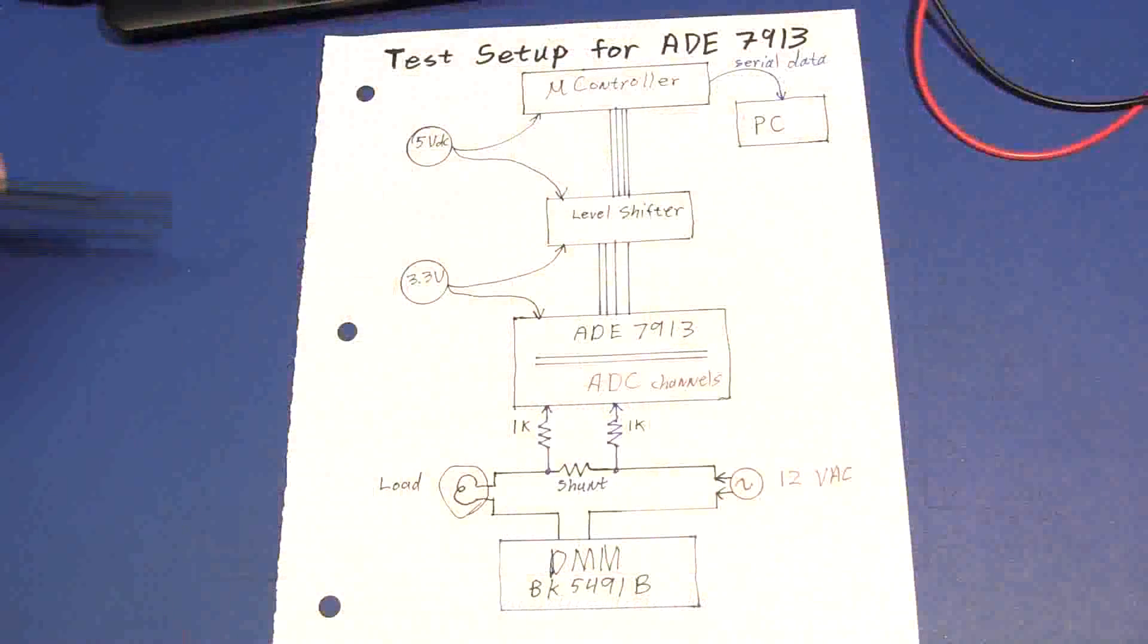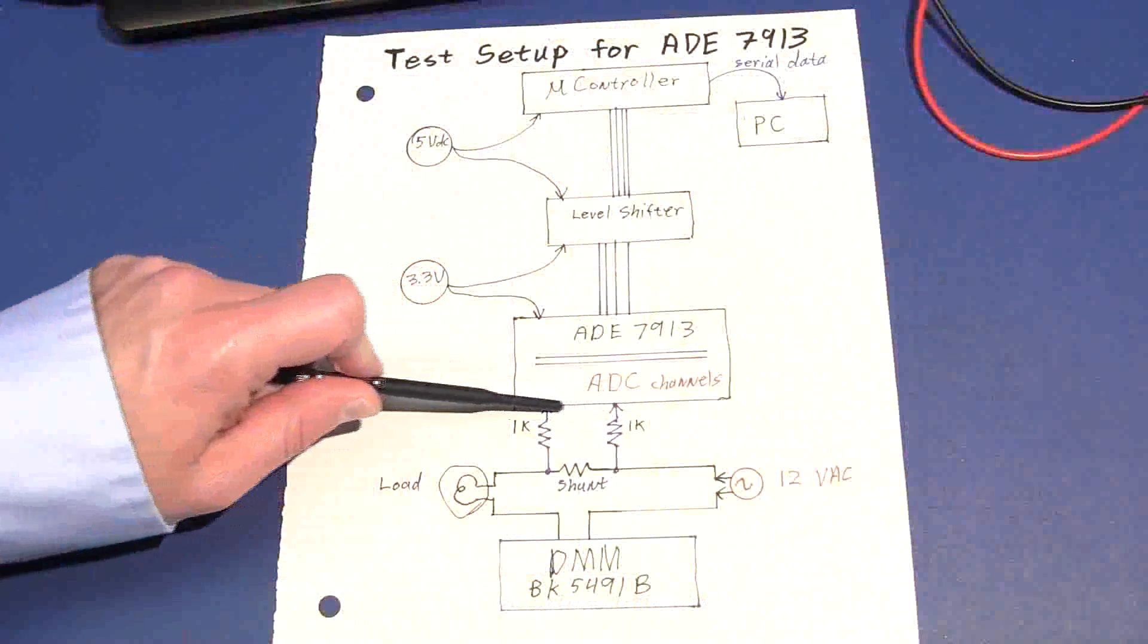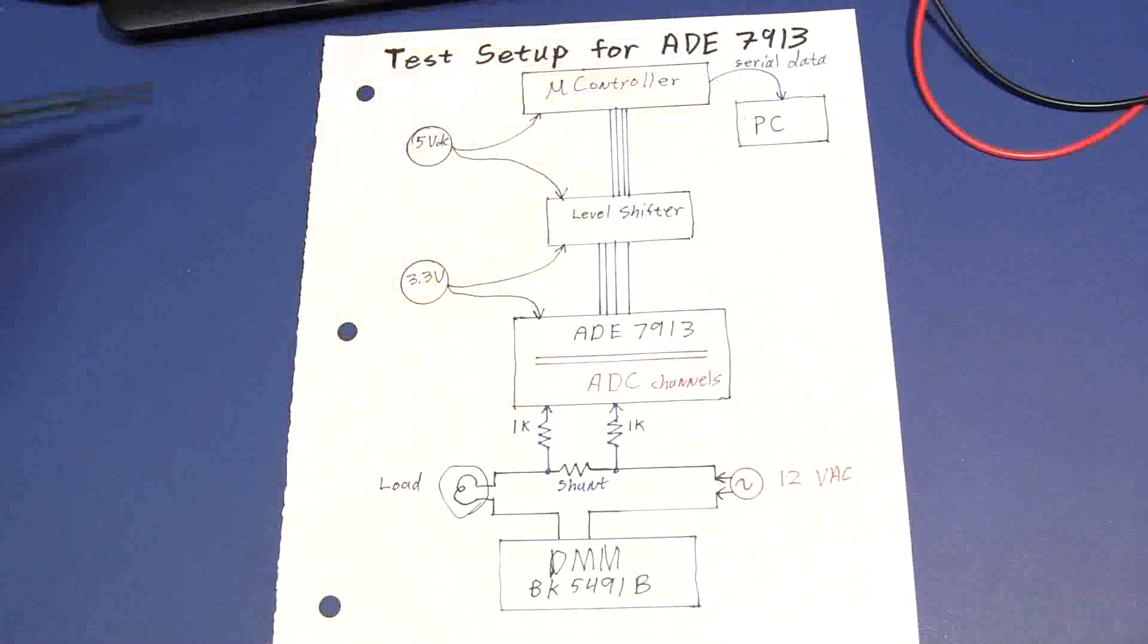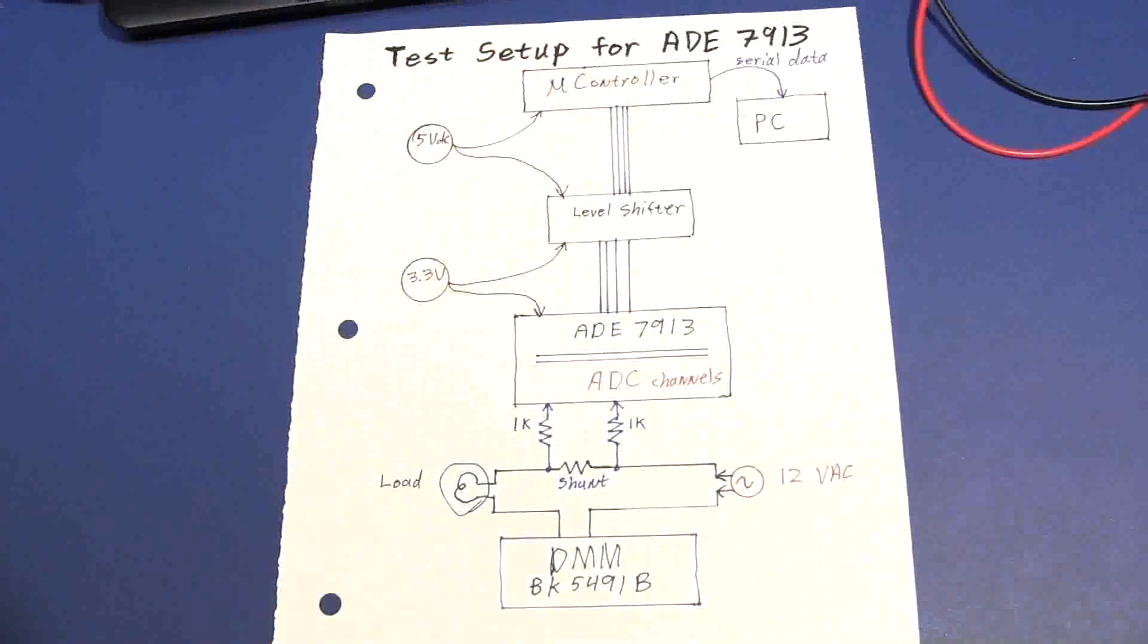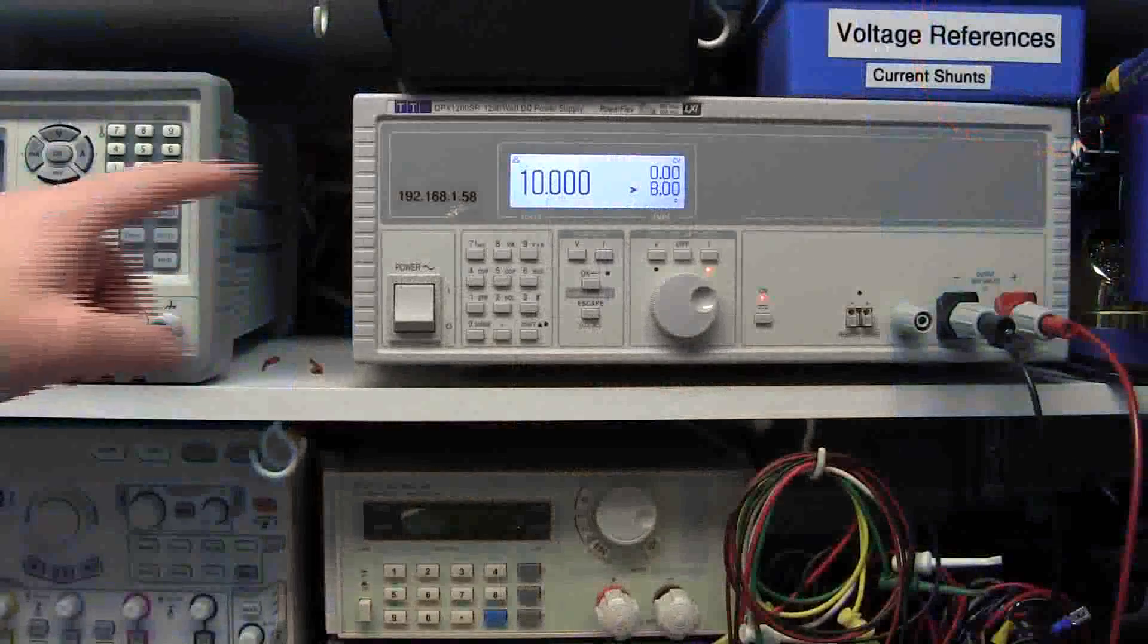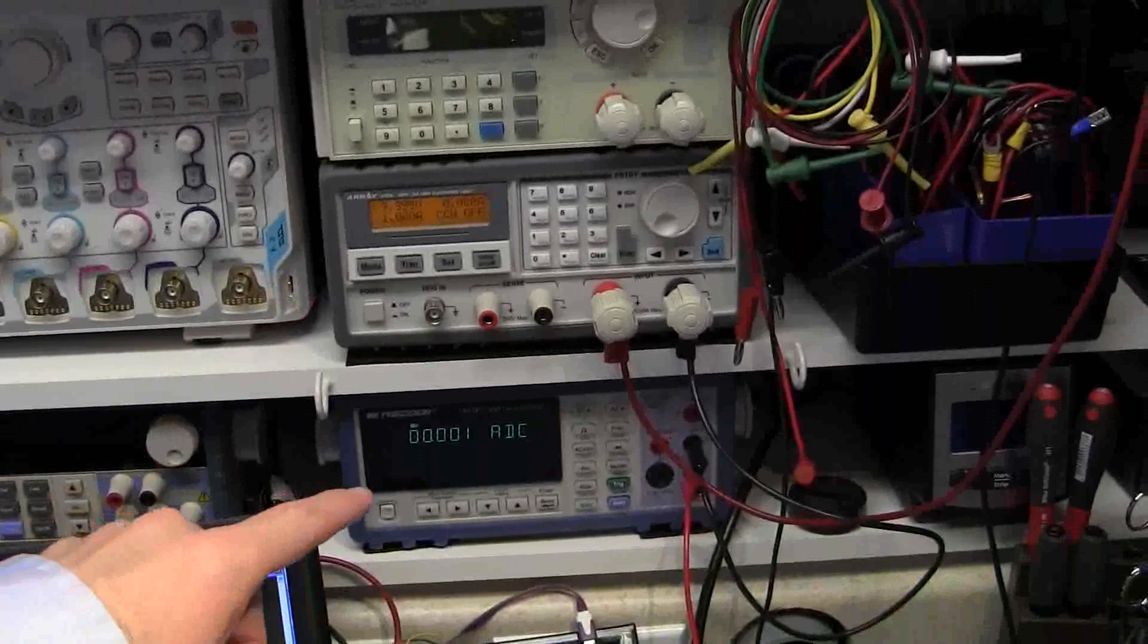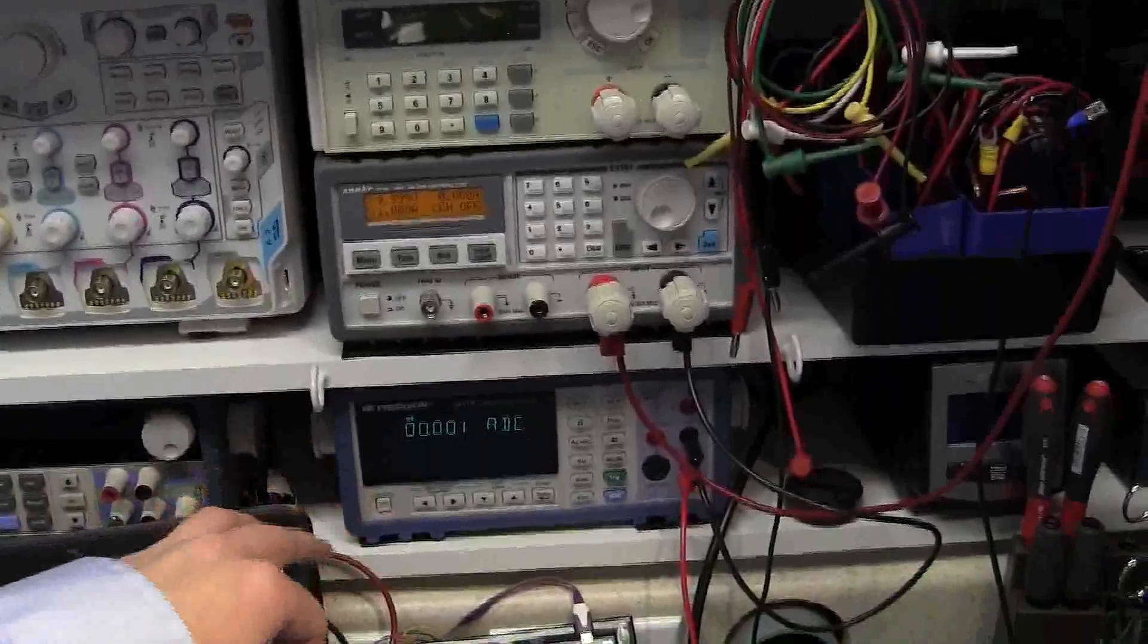So here's the test setup for today. Initially, we're going to start with a DC load to our level shifter, to the microcontroller, and out to the PC. For the initial test setup, we're going to use a high current DC power supply, down to a DC load, down to the meter to monitor the current more accurately.